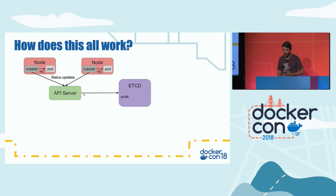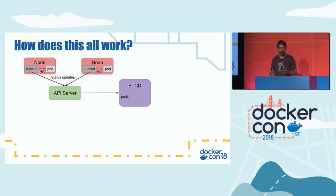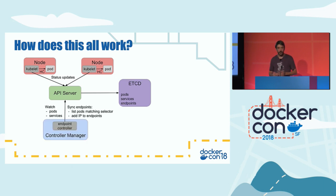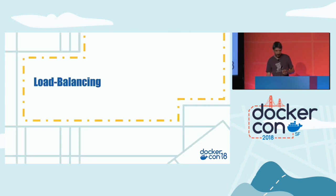When a pod is scheduled on a node, the kubelet starts the pod and, if a health check is defined, performs health checks against the pod, updating the API server with pod status stored in etcd. There's another component called the endpoint controller, which watches for pods, services, and all related events. When something changes, it updates the endpoint object with the new IP addresses.